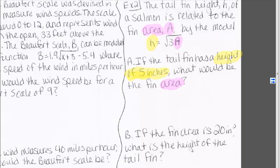Part a: If the tail fin has a height of 5 inches, what would be the fin area? And b: If the fin area is 20 inches squared, what is the height of the tail fin?